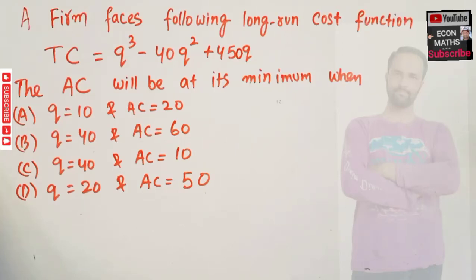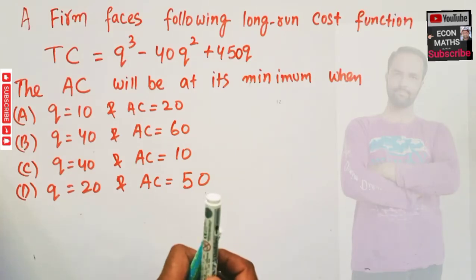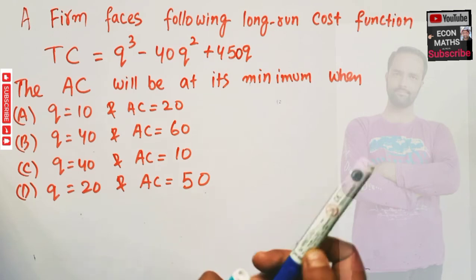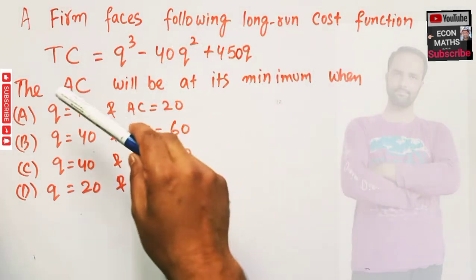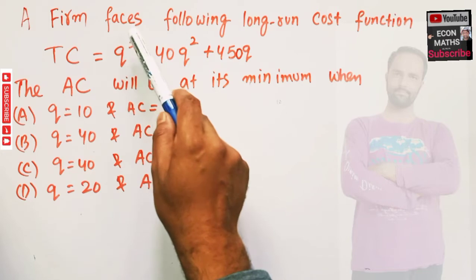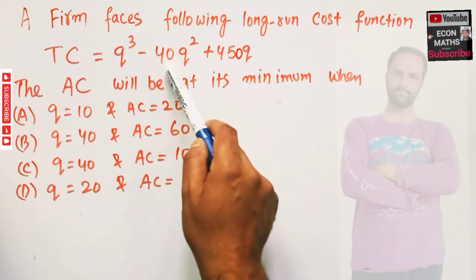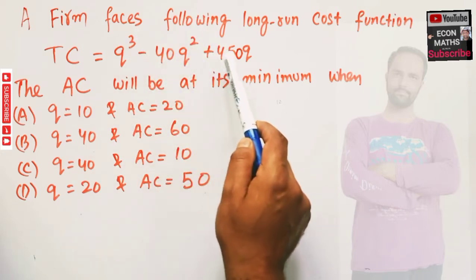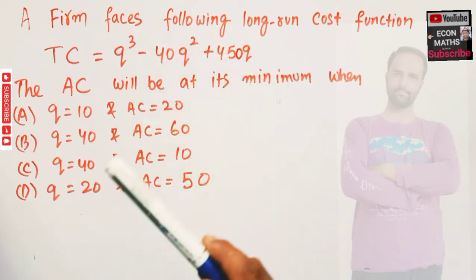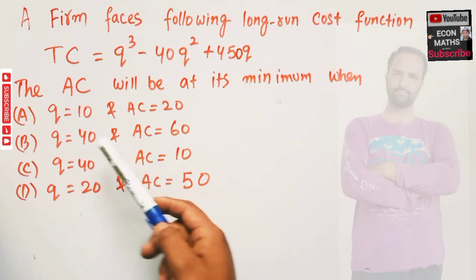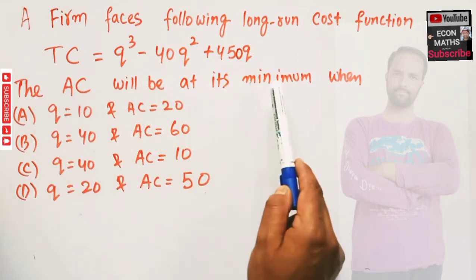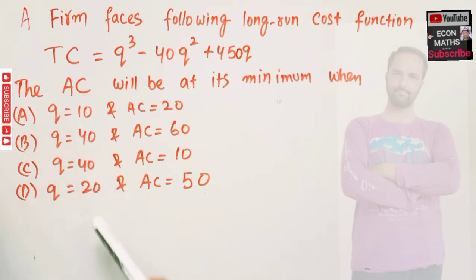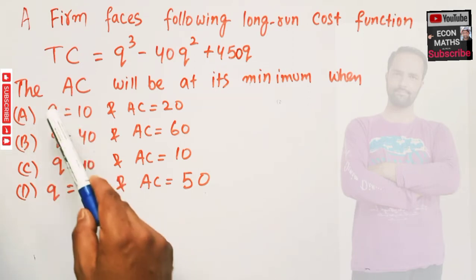In this video we will solve a problem on how to find the minimum average cost. The question is: a firm faces the following long-run cost function — total cost is equal to Q cubed minus 40Q squared plus 450Q, where Q denotes output. The average cost will be at its minimum when the output is...